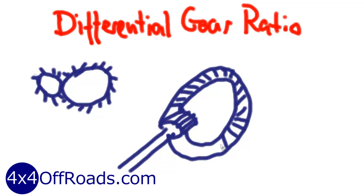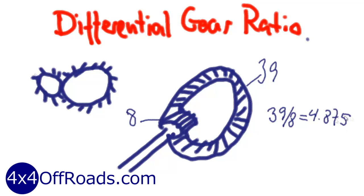The differential works in the same way except the directions of the axles are at a 90 degree angle. So, the pinion is an extension of the driveshaft and the ring is around the axles. In this case the pinion has 8 teeth and the ring 39 teeth. Dividing gives us the real ratio of 4.875.